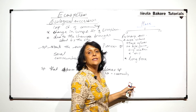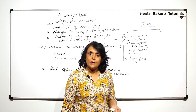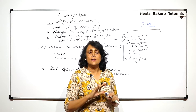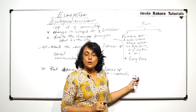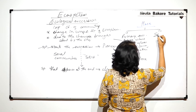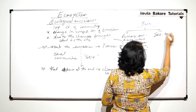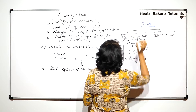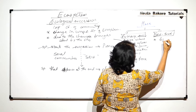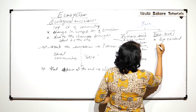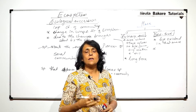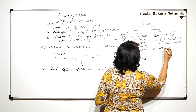If succession takes place in an area where there was life earlier, but because of natural calamities or human activities every life form was lost, and now succession starts there, then we call it secondary succession. Primary succession takes a longer period of time; secondary succession, because life previously existed in that area, takes a shorter time period.